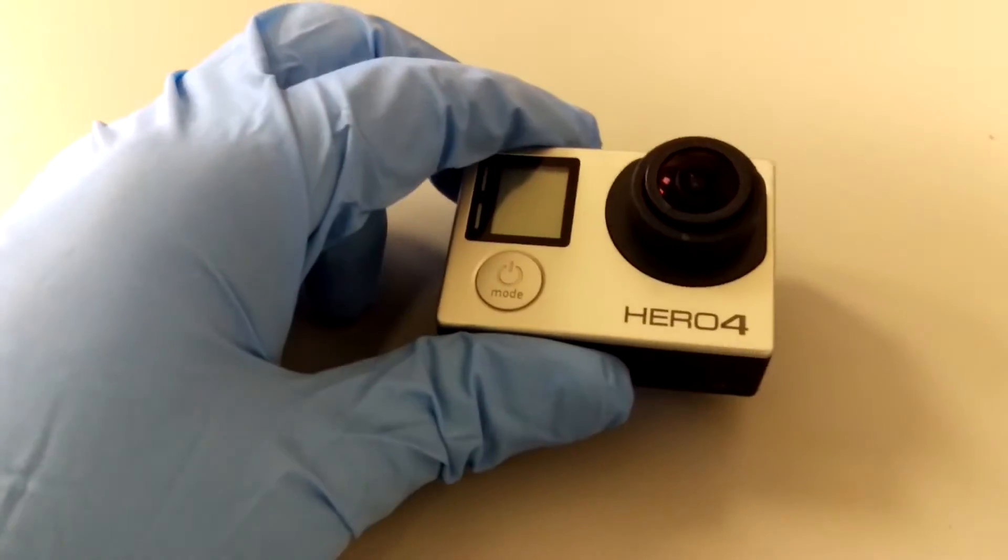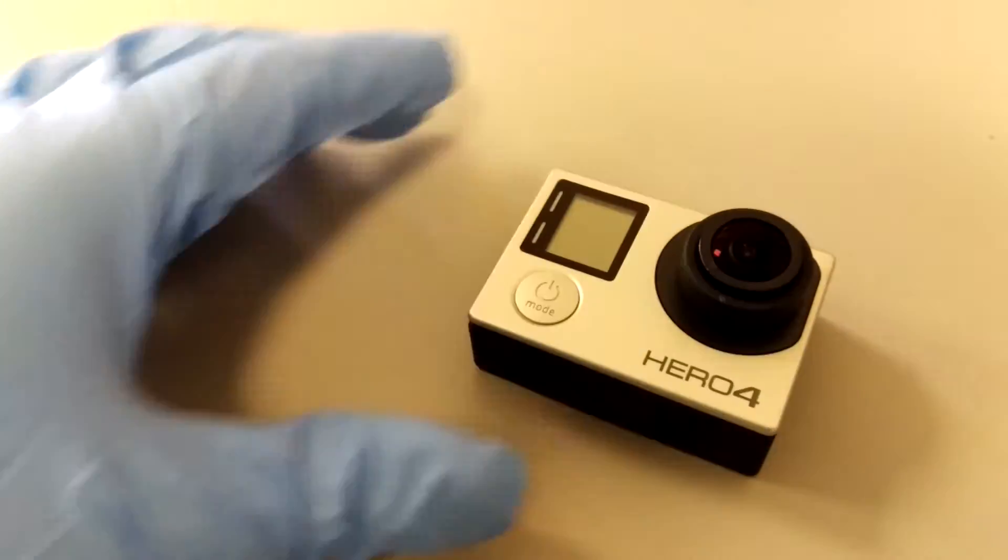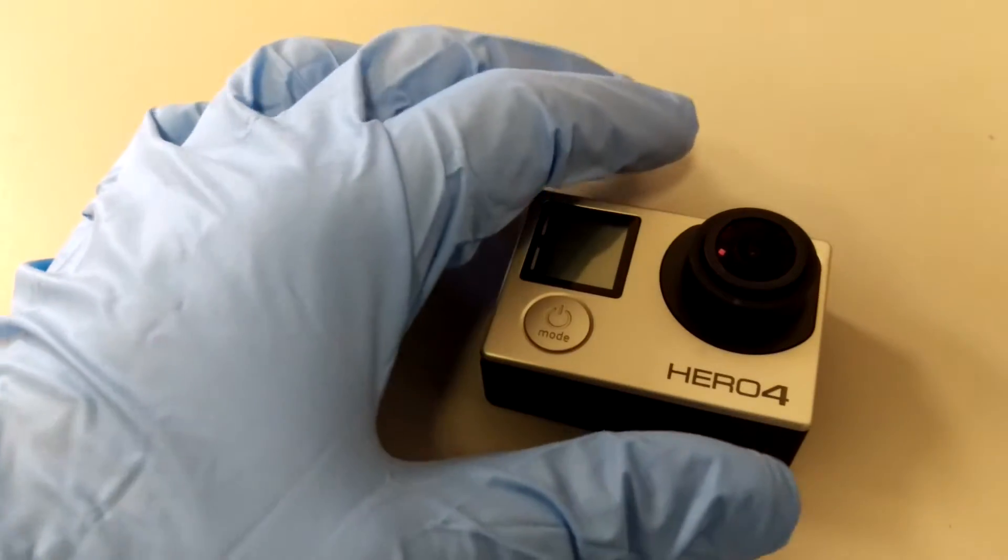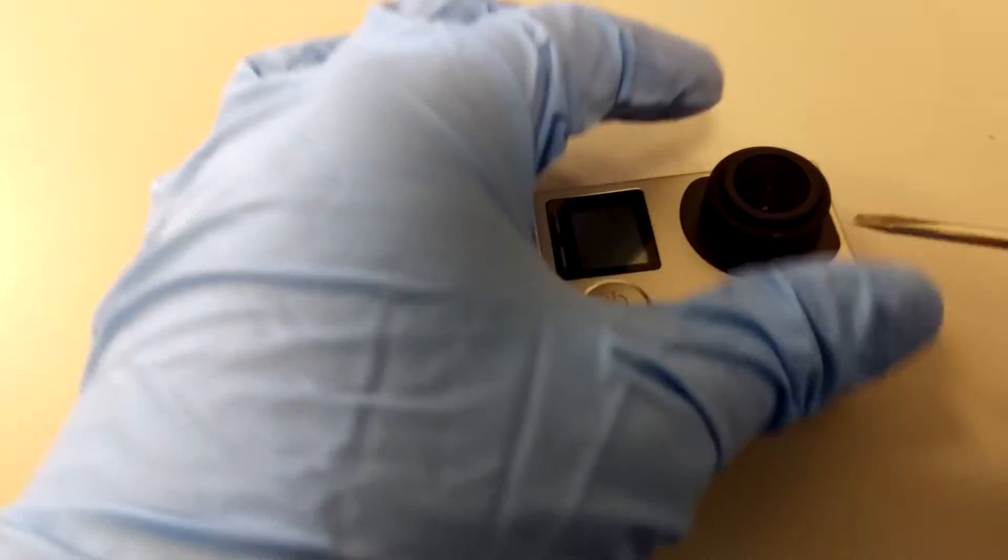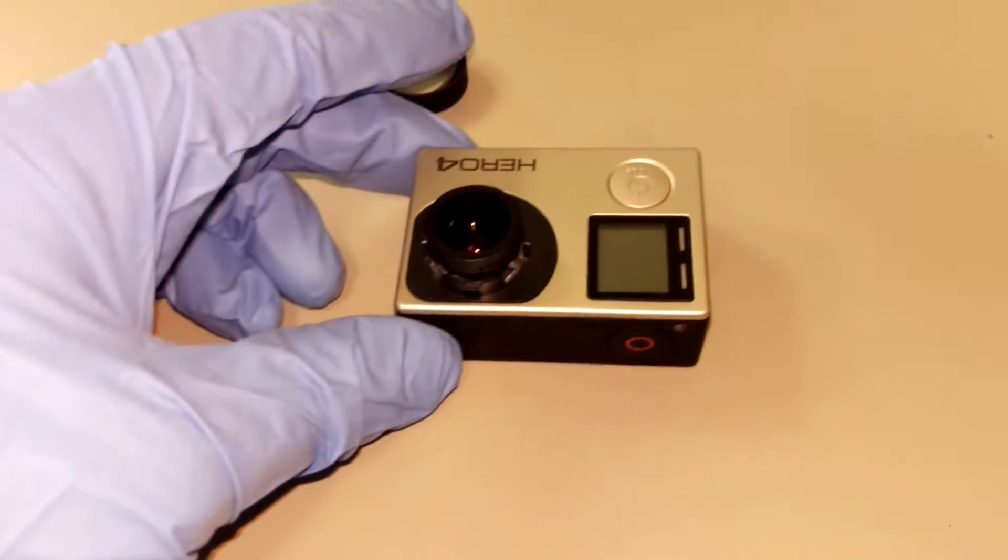Okay guys, this is a video to modify the GoPro Hero 4 to use the near-infrared lens. So first you want to use a small screwdriver and pry this rubber cap off.